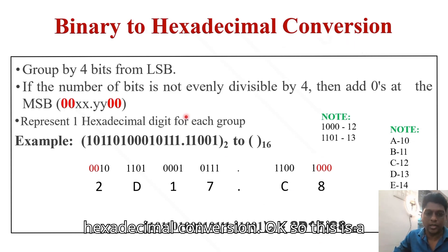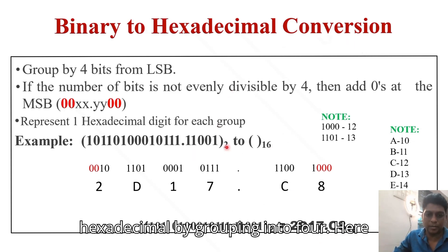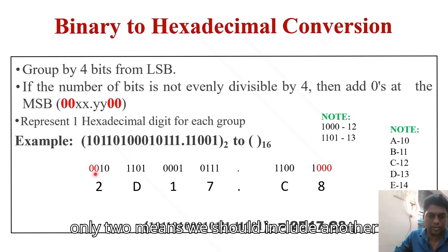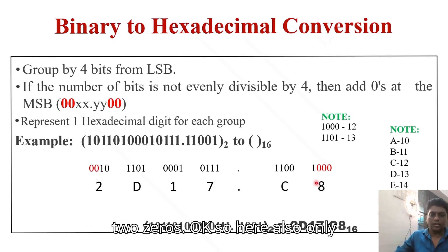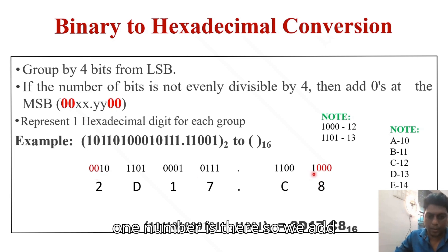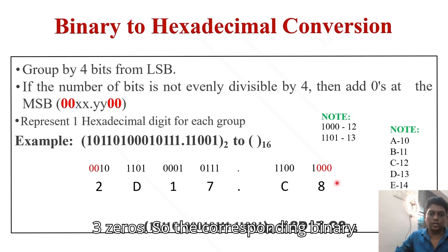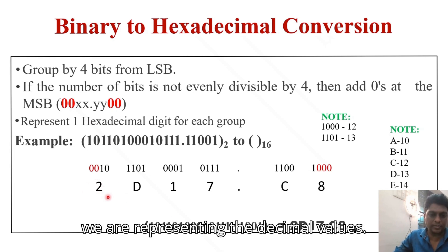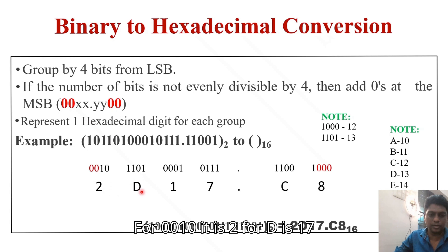For binary to hexadecimal conversion, group the binary digits into groups of 4 bits. If a group has fewer than 4 bits, pad with zeros. For example, for the group 0010 the value is 2. The result is represented as hexadecimal, for instance 1D7.C8.